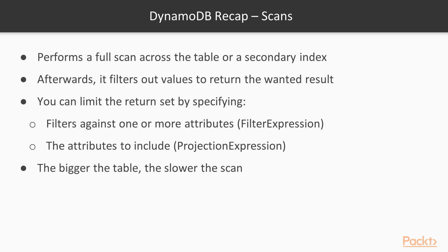Scans retrieve all items and attributes by performing a full scan across the table or a secondary index, then filter out values to return the wanted result. You provide the partition key to start the scan and it goes through the entire table. You can limit the return set by specifying a filter expression against one or more attributes, or a projection expression to include specific attributes. The bigger the table, the slower the scan, because it must look at every single item.